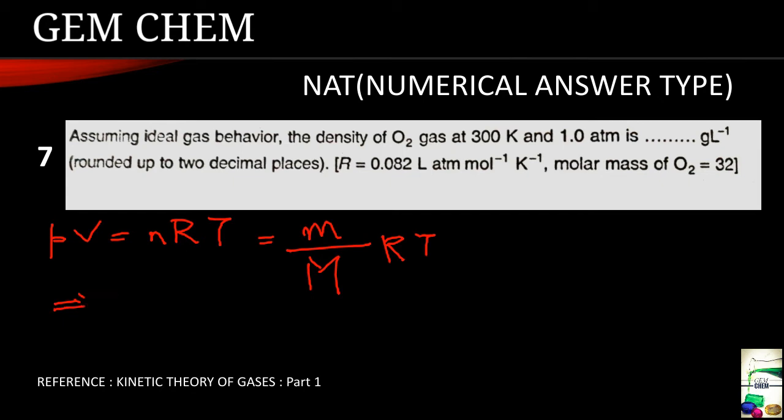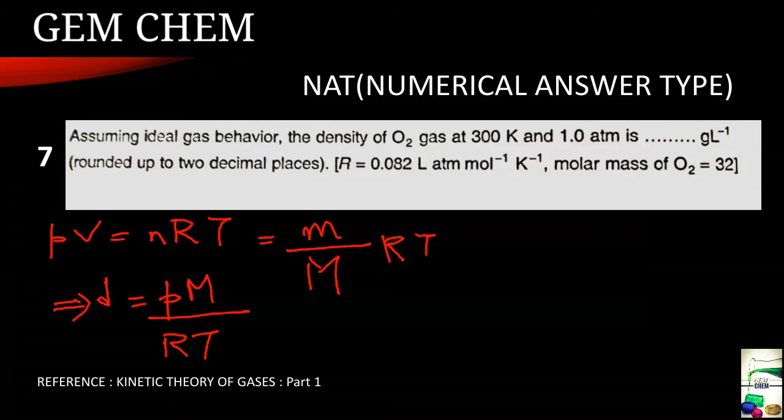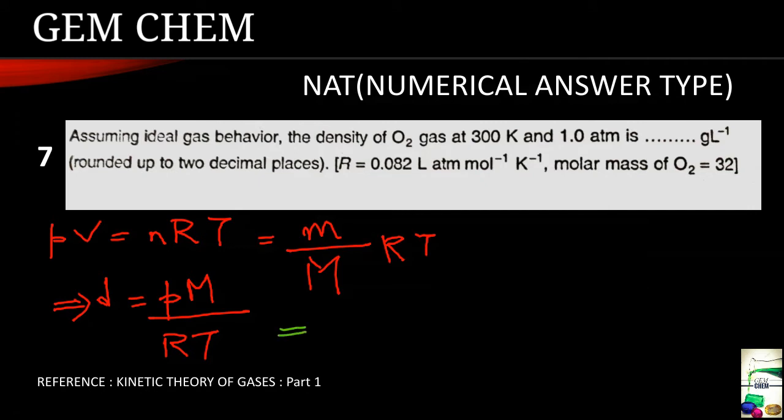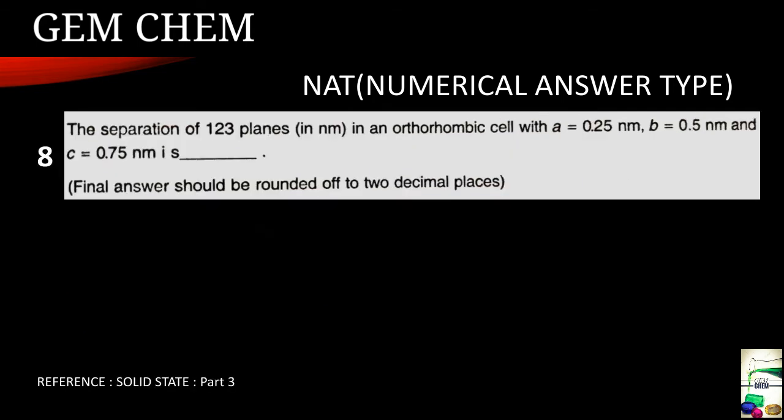Now this can be further rearranged to give this equation, that is D is equals to PM by RT. Now what is going on here? This M and this V, we know that density is equals to mass by volume. So we just take this V downwards and all these terms are taken this side to get the density. Now we just put the values here and ultimately our value comes to be as 1.30 gram per liter. And we have to write only this in the answer space. Now we will go for the next one.